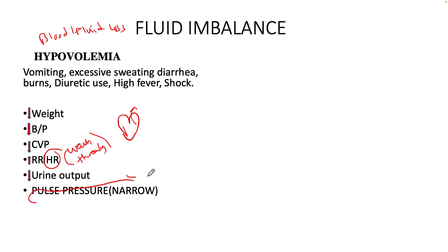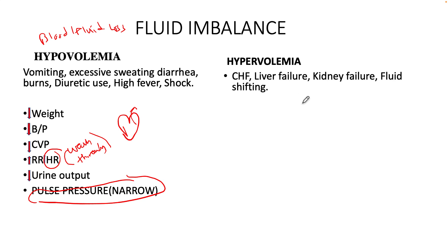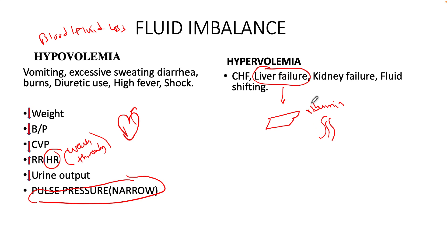For hypervolemia, causes include congestive heart failure, liver failure, kidney failure, and fluid shifting. With liver failure — particularly liver cirrhosis from alcoholism — the liver cannot produce albumin, the protein that holds fluid in the intravascular space. Without albumin, fluid leaks from the intravascular space into the interstitial space, which is why patients with liver cirrhosis have a large, distended abdomen filled with fluid.